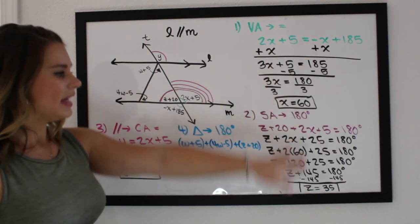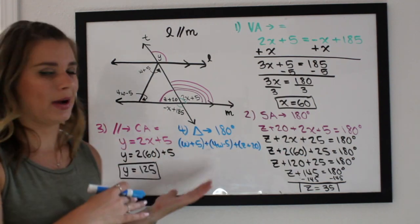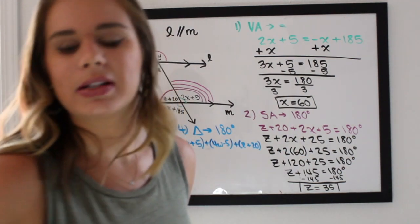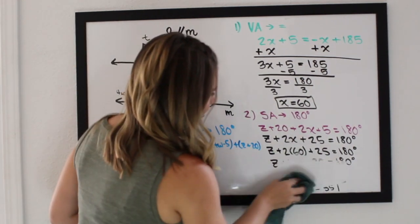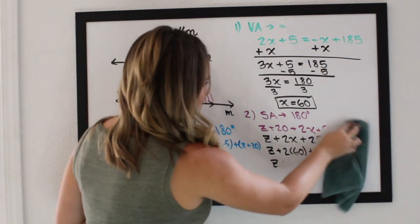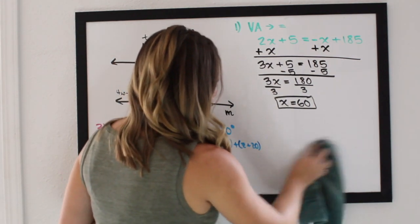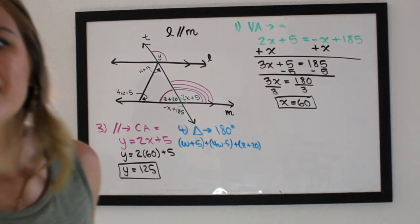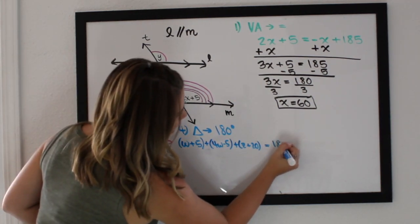So if you need those still, go ahead and rewind, pause, and you can still get those. But it looks like I do need to erase at least this one so that I have some room. Sorry about that, I thought I could make it fit.